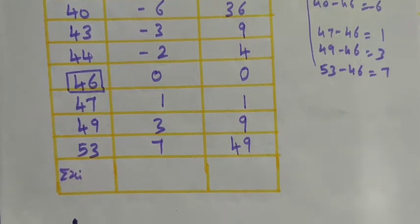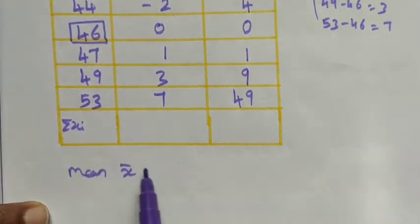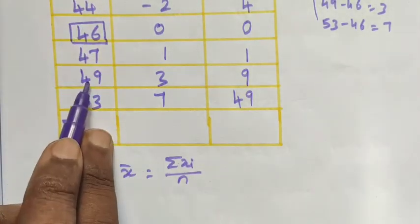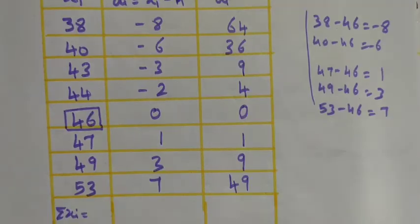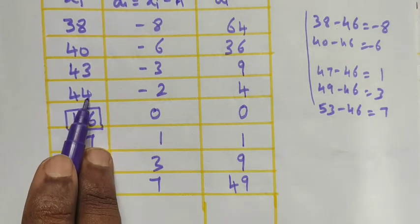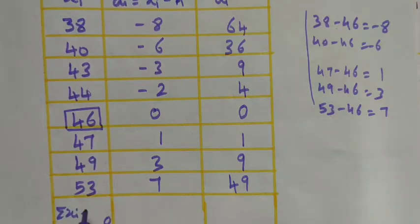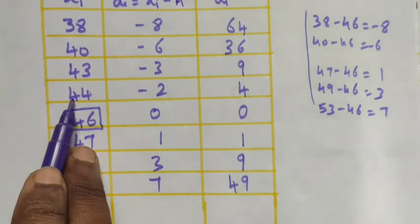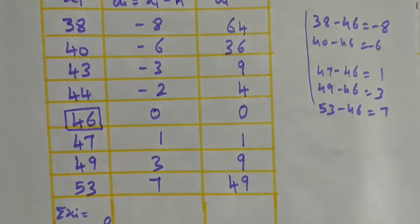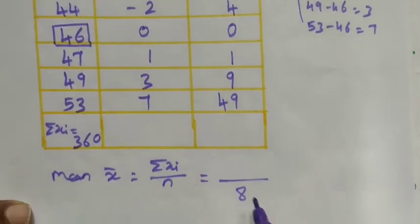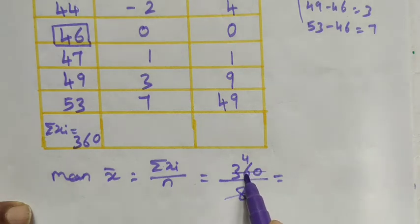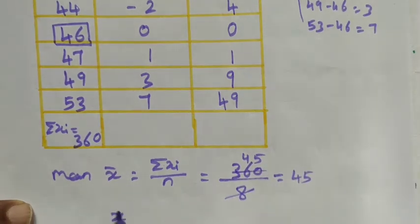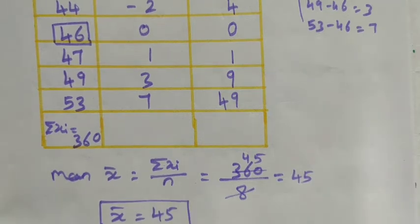To find the mean, x̄ = Σxi divided by n. The sum of all xi values: 38+40+43+44+46+47+49+53 = 360. So Σxi = 360. Therefore x̄ = 360 divided by 8 = 45. The mean is 45.